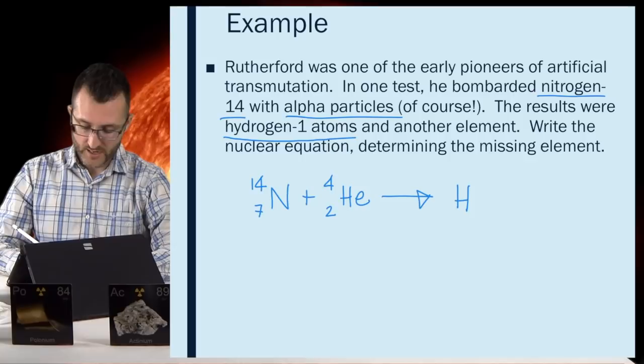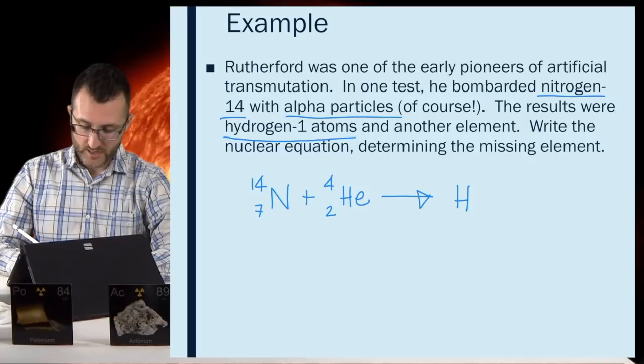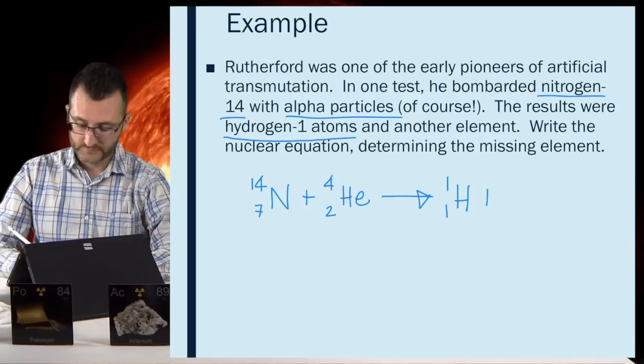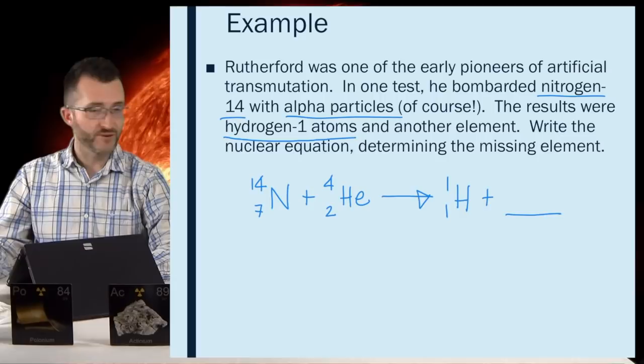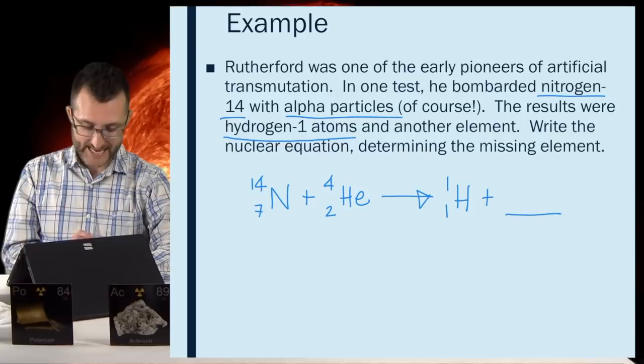Alright, so I've got to have my masses on both sides equal. Okay. So, over on the left, it looks like 14 plus 4 is 18, right? I've got 18 as my total mass. So, over on the right, I'm going to also want 18. So, I've got one for hydrogen. I'm going to need 17 for my mystery element.